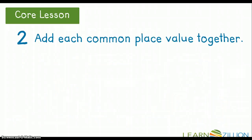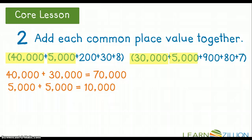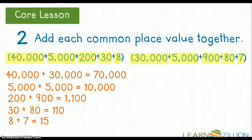So my second step in partial sums is to add each common place value together. So if I take a look at my two numbers that I've written in expanded form, I notice that 40,000 and 30,000 have a common place value together. They're both in the ten thousands place. So 40,000 plus 30,000 equals 70,000. Then I jump to my next place value, which is the thousands place. And I notice that I have 5,000 and 5,000 in each of these numbers written in expanded form. So 5,000 plus 5,000 gives me 10,000. Then I go to the hundreds place. I have a 200 and a 900, so 200 plus 900 equals 1,100. Then we skip to the tens place. I have a 30 and an 80, so I know 30 plus 80 equals 110. And then I go to my ones place and I have an 8 and a 7, so 8 plus 7 equals 15.